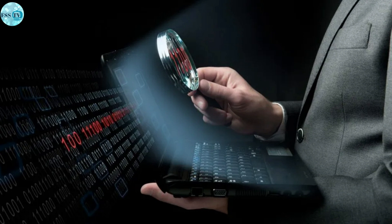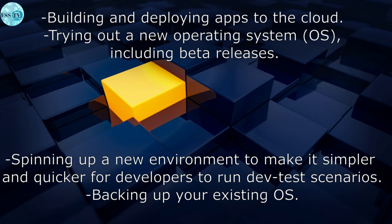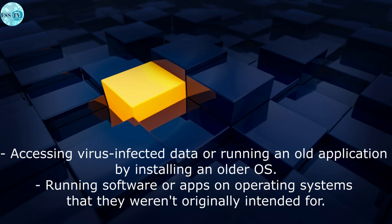You can also run a single-purpose virtual machine to support a specific process. Here are a few ways virtual machines are used: building and deploying apps to the cloud, trying out new operating systems including beta releases, spinning up new environments to make it simpler and quicker for developers to run dev-test scenarios, backing up your existing operating system, assessing virus-infected data, running an old application by installing an older operating system, and running software for apps on operating systems they weren't originally intended for.